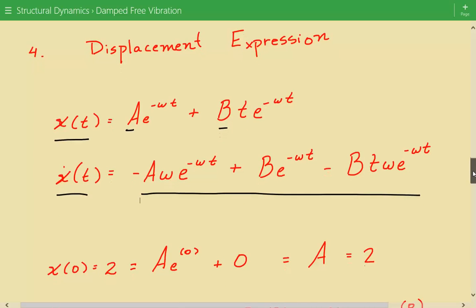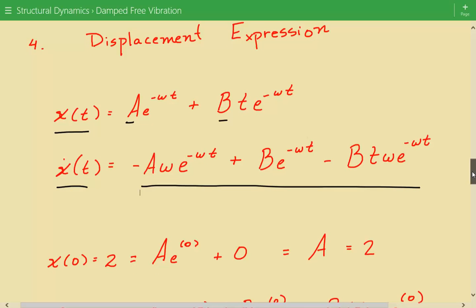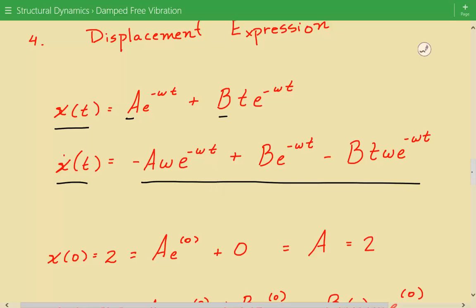Let's take the initial displacement condition first. We know that at time equals 0, the initial displacement is equal to 2 inches. So we just plug in 0 into the displacement expression and solve for A. And so we find that A equals 2.